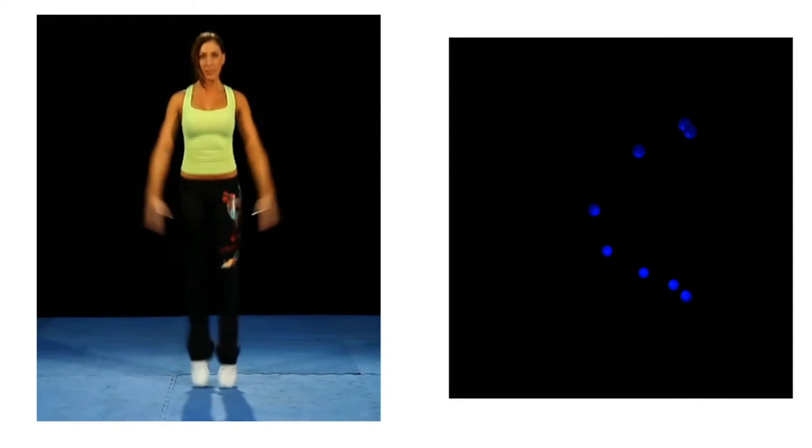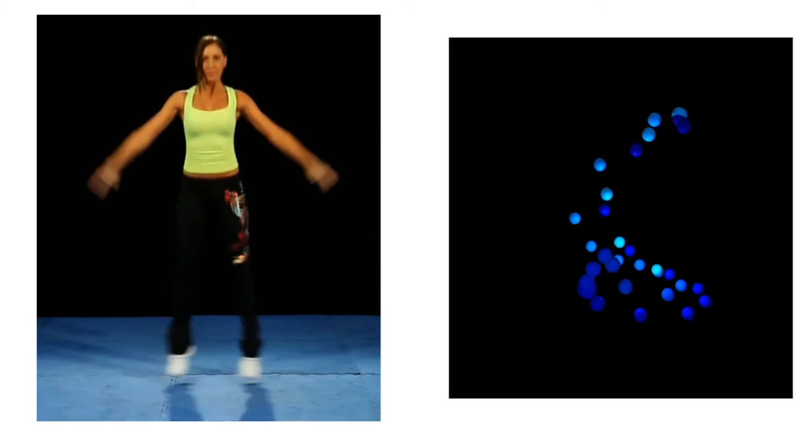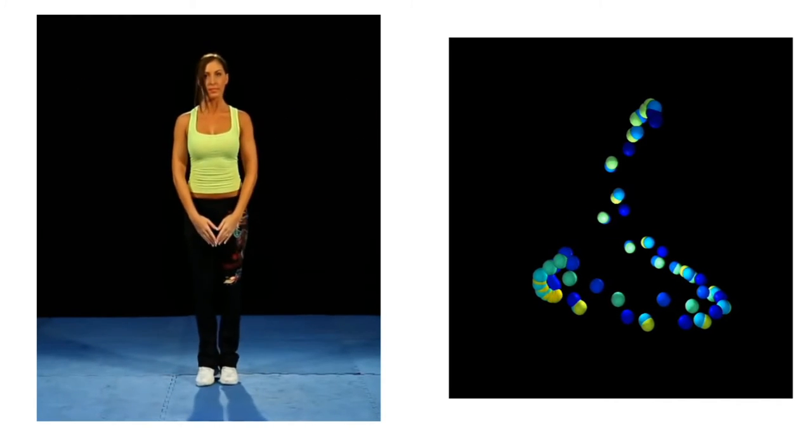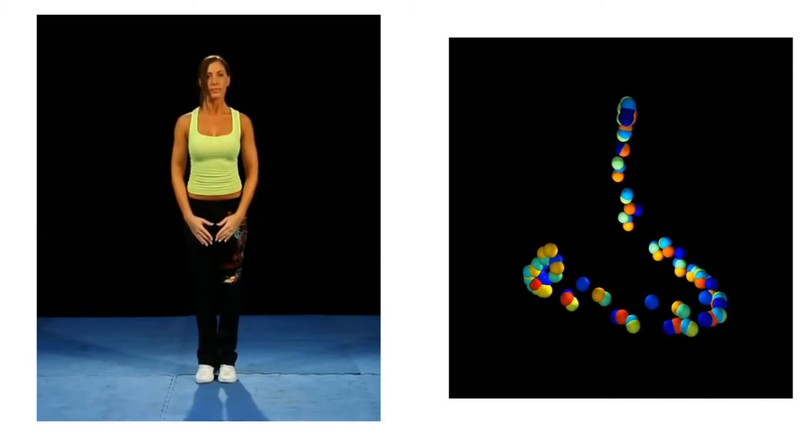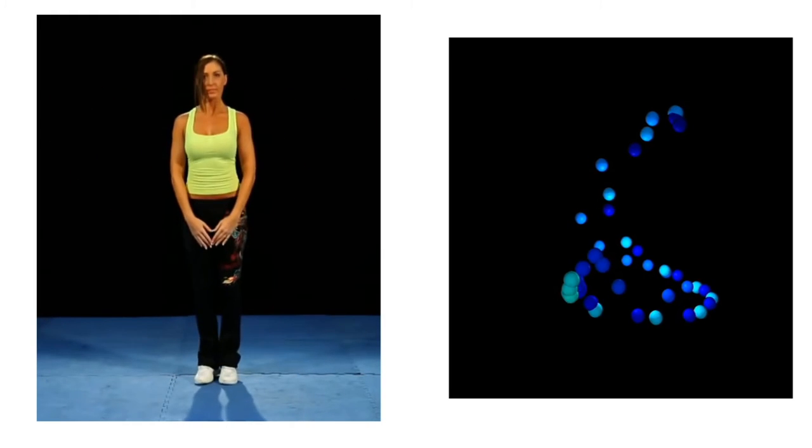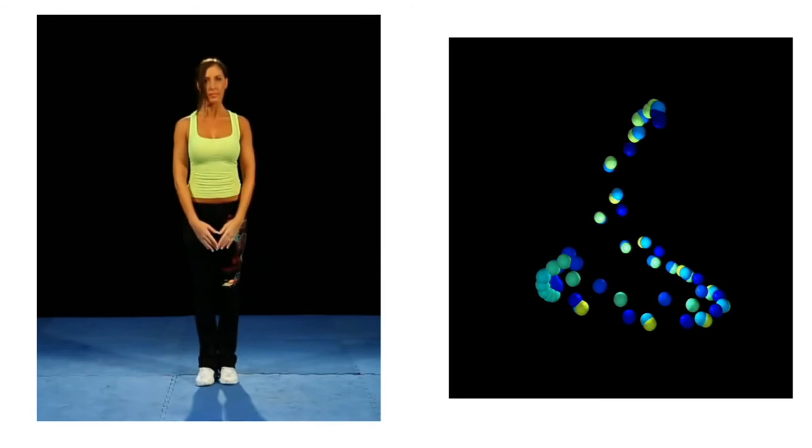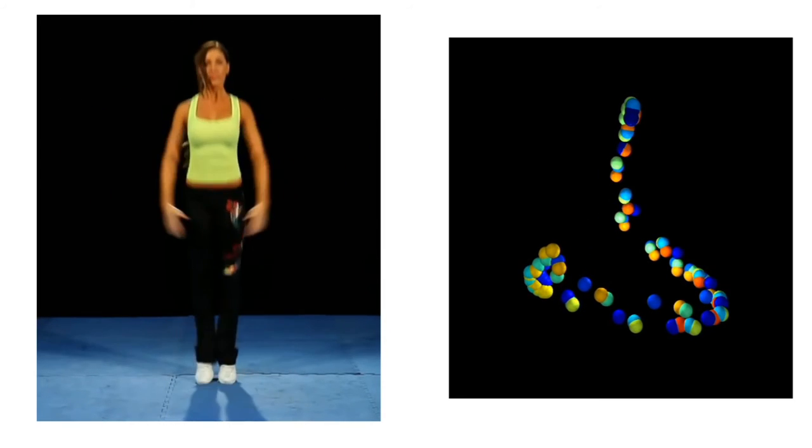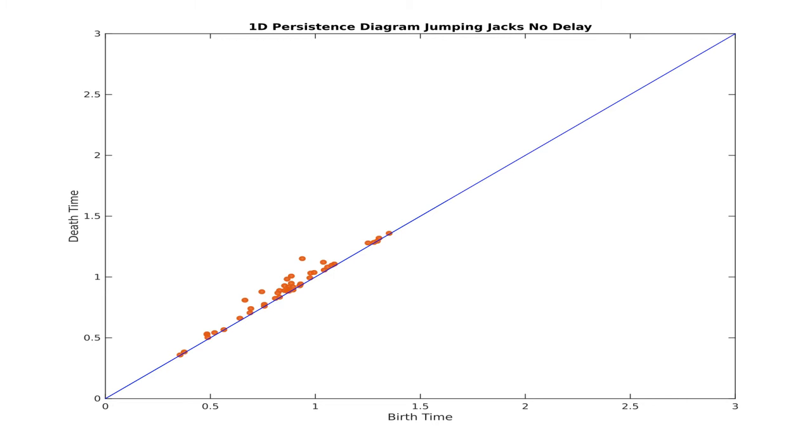Finally, we note that a raw embedding with no sliding window, or each frame as its own point, does not form a topological loop in the embedding. This is because without the delay, the frames have mirror symmetry between the first half and second half of their period, so it is impossible to uniquely represent all states. Looking at the 1D persistence diagram in this case, there are no strongly persistent 1 cycles.